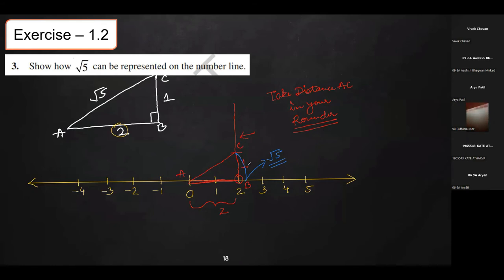This is how we will be representing √5 on the number line.